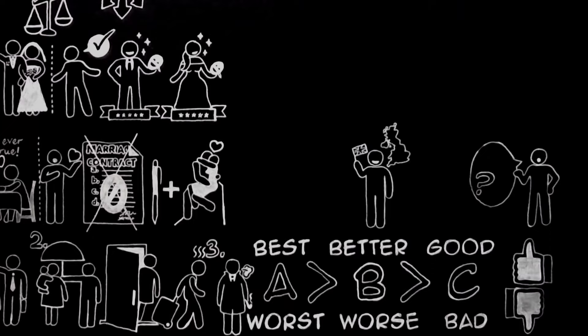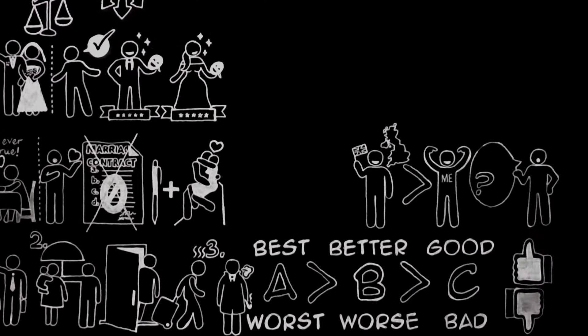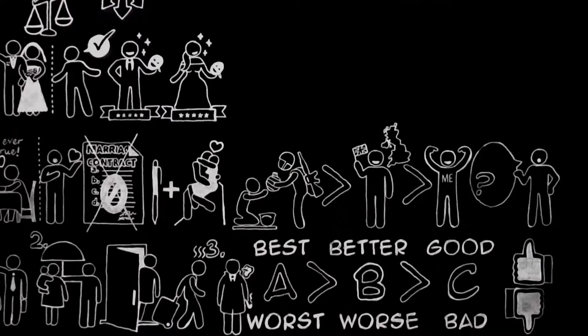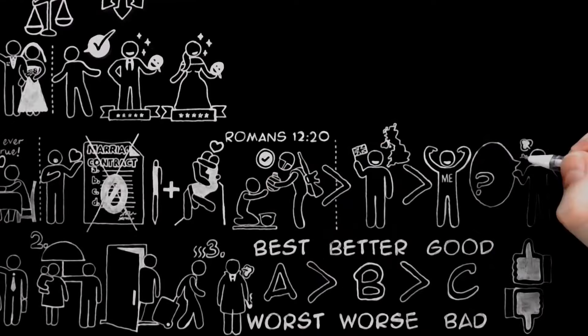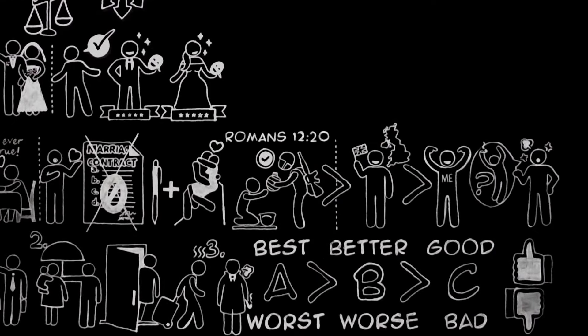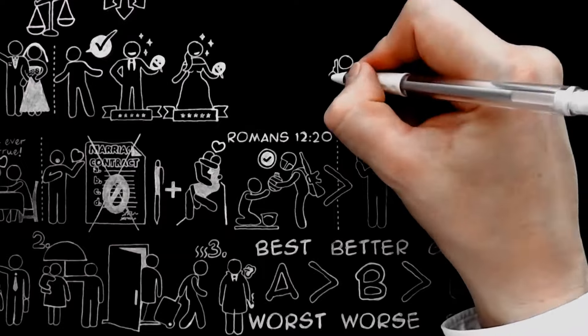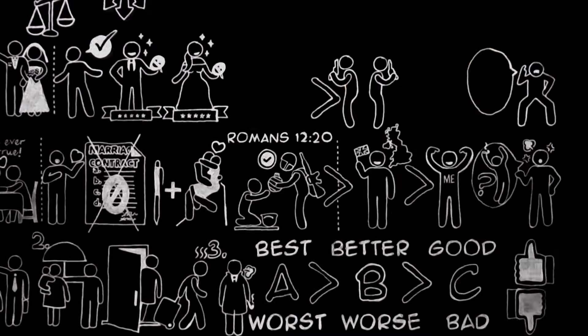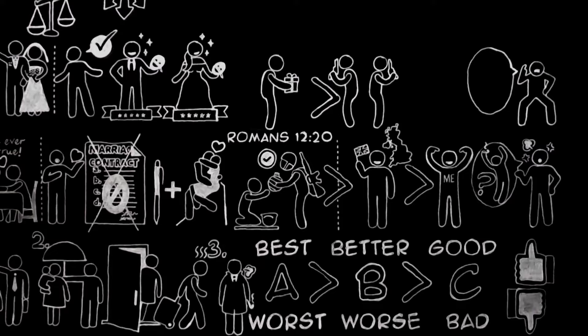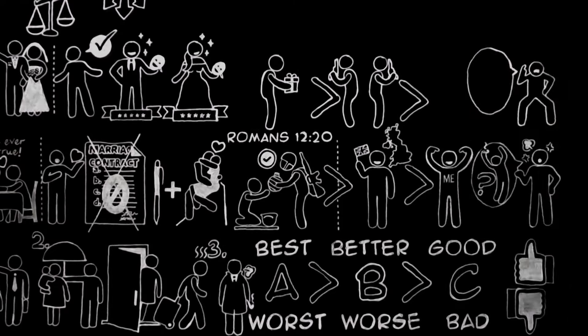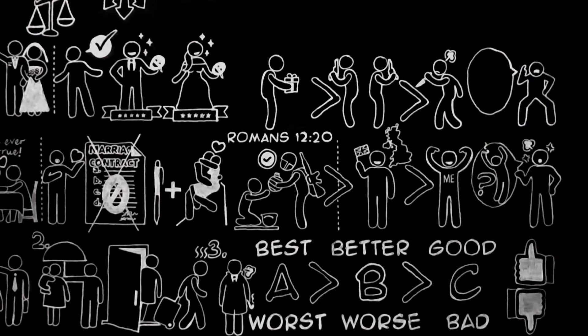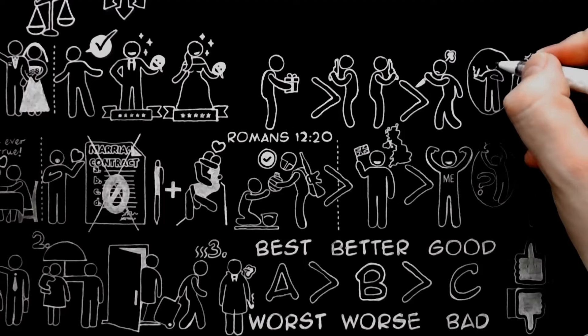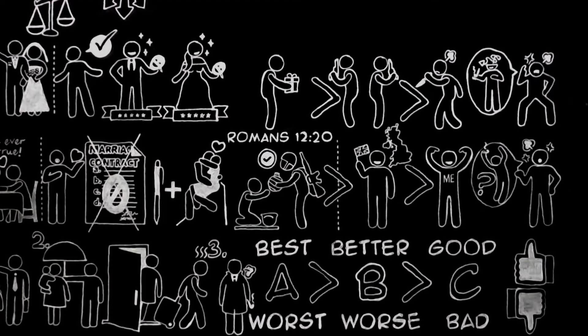They want to know whether you think patriotism a good thing. If you reply that it is, of course, far better than individual selfishness, but that it is inferior to universal charity and should always give way to universal charity when the two conflict, they think you are being evasive. They ask you what you think of dueling. If you reply that it is far better to forgive a man than to fight a duel with him, but that even a duel might be better than a lifelong enmity which expresses itself in secret efforts to do the man down, they go away complaining that you would not give them a straight answer. I hope no one will make this mistake about what I am now going to say.